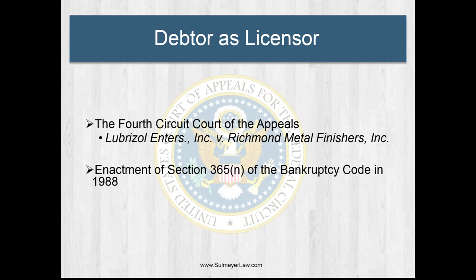An important area is what happens in a bankruptcy case where the debtor is the licensor and elects to reject the license agreement — what are the rights of a non-debtor licensee? This arose in a case called Lubrizol, coming out of the Fourth Circuit in the mid-1980s. That court held that a technology debtor-licensor could unilaterally reject its license agreement and eliminate the right of the non-debtor licensee to use the intellectual property. The intellectual property community reacted very severely to this, finding that it would chill the licensing of intellectual property, and sought special protection for IP licensees from Congress.